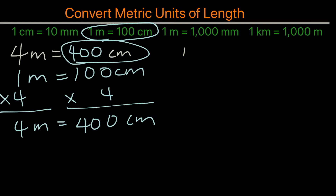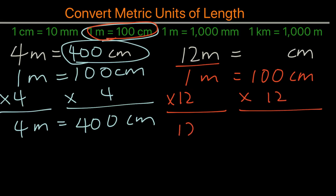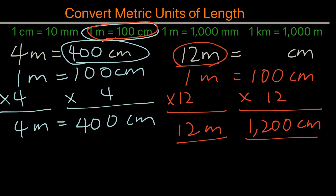Now what about this one? 12 meters equals how many centimeters? We use this conversion again: 1 meter equals 100 centimeters. To reach 12, we multiply both sides by 12. This gives 12 meters, and after multiplying 100 by 12, you will have 1,200 centimeters. Then you can place that right here — that's your answer.